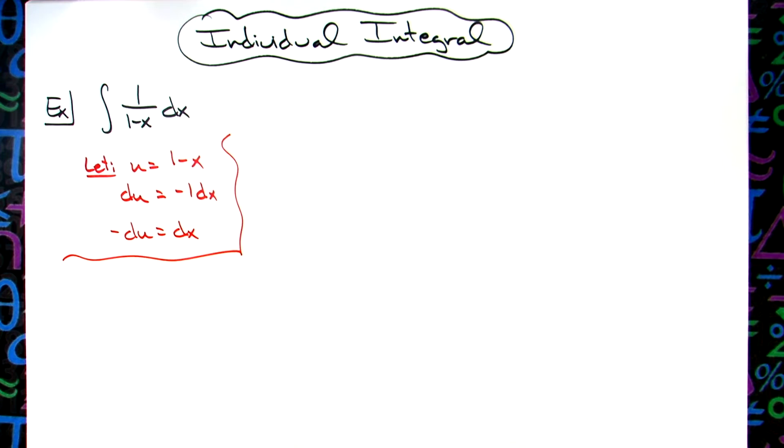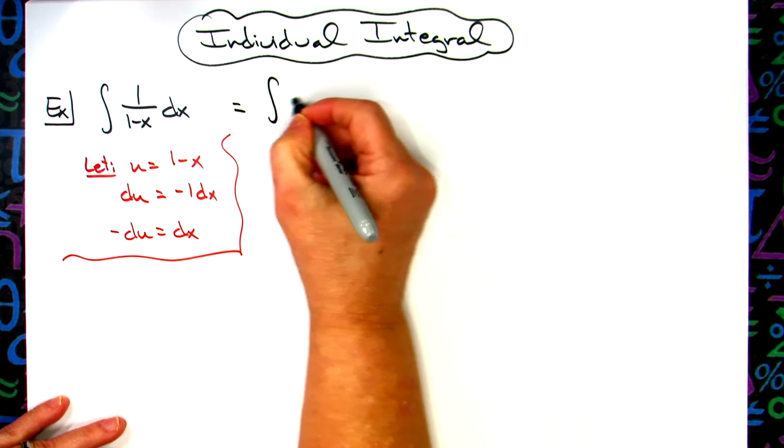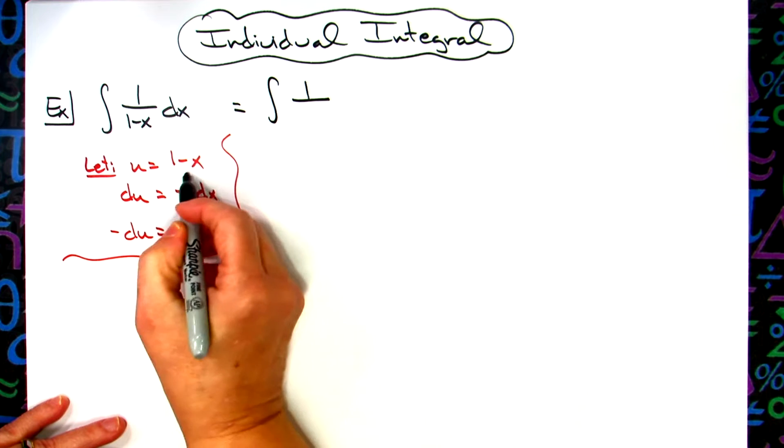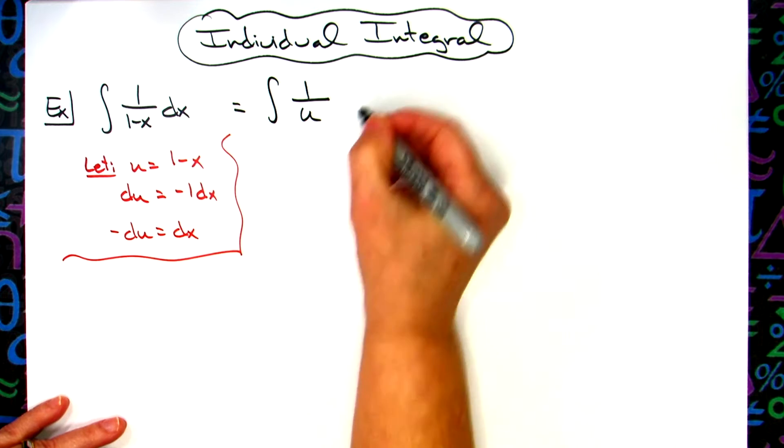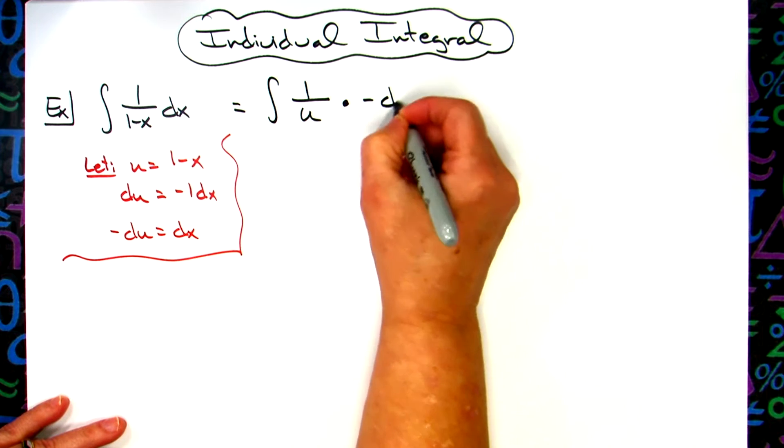All right now at that point then we'll come back up here to our original integral and we'll start making some substitutions. We're going to have an integral, we'll have that one on top. I'm going to replace the denominator with the u. I'm going to replace that dx with the negative du.